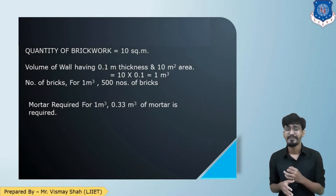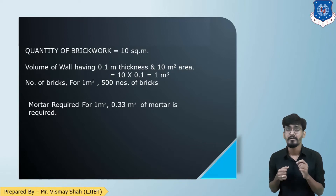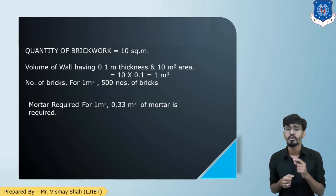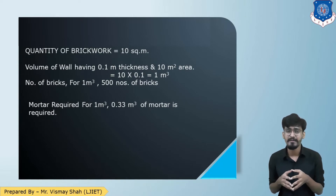Here for the first time we are given the quantity as 10 meter square, but mortar for brickwork is prepared in meter cube. To convert this area into volume we use the thickness, so volume equals area multiplied by thickness: 10 meter square by 10 centimeter, giving us 1 cubic meter.